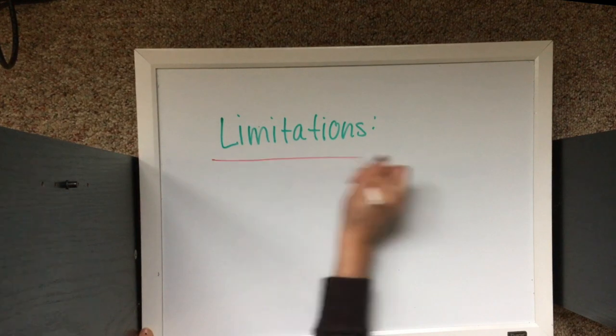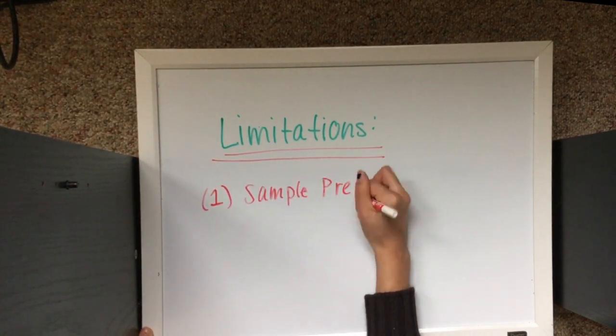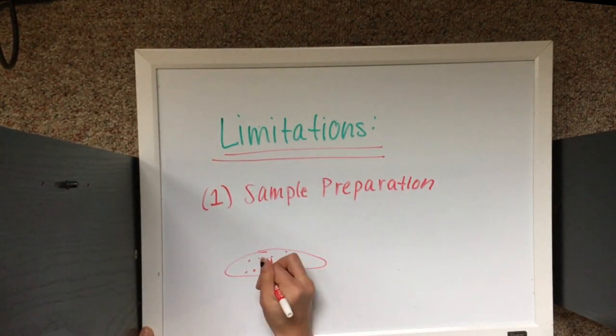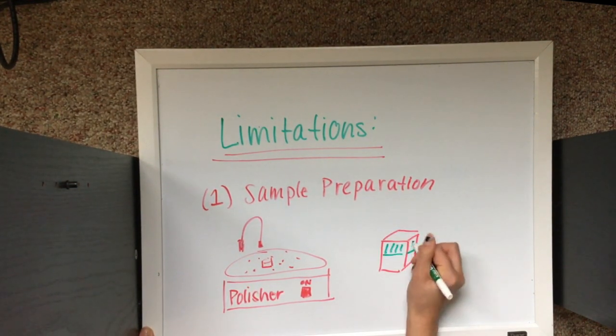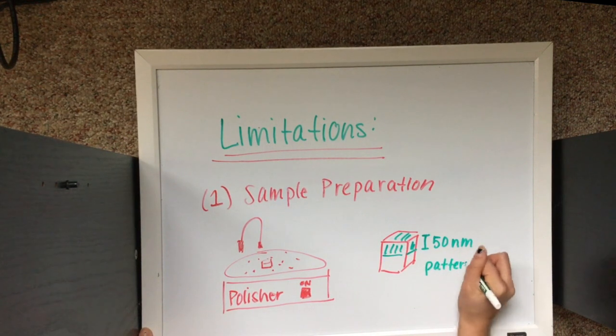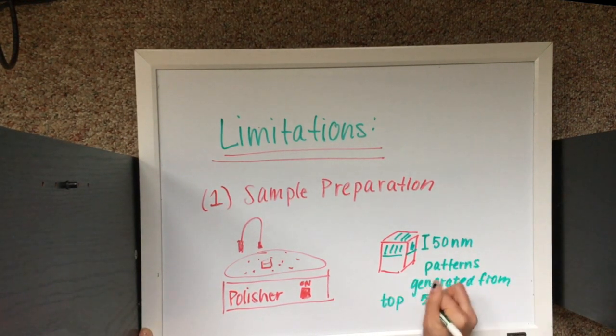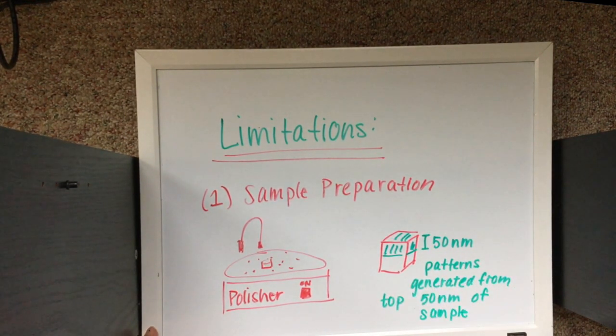However, this method does have drawbacks. Sample preparation must be performed with extreme care. For most samples, fine surface polishing, electropolishing, and chemical etching are options for getting rid of deformation and inconsistencies on the surface. For thin films, ion etching can be used. This is very hard to do on thin film specimens because you have to remove most of the sample to remove deformation and contamination.